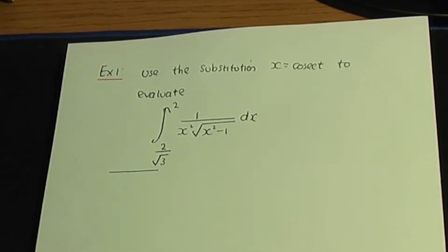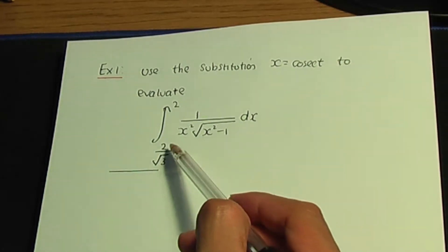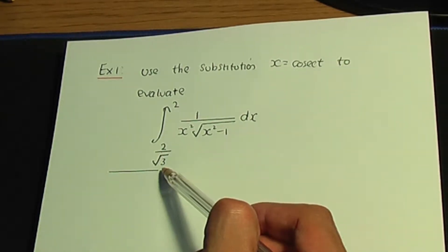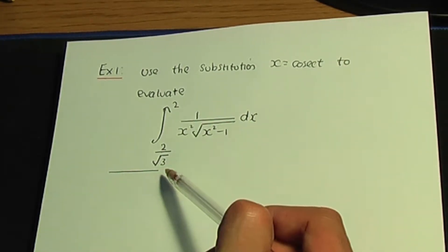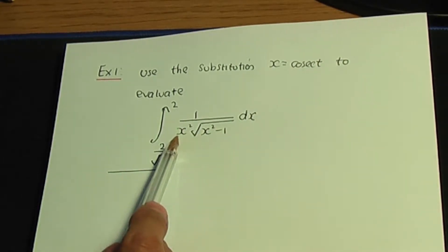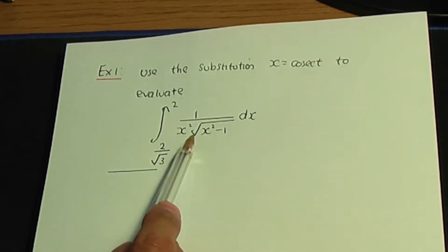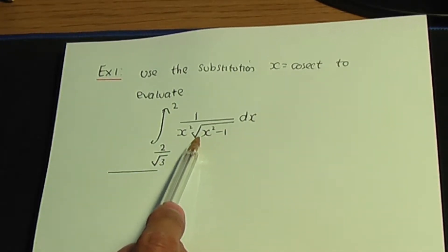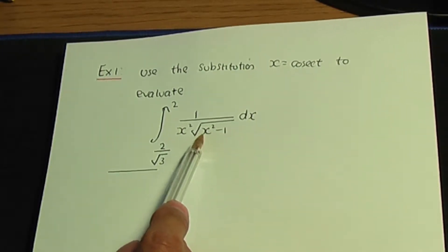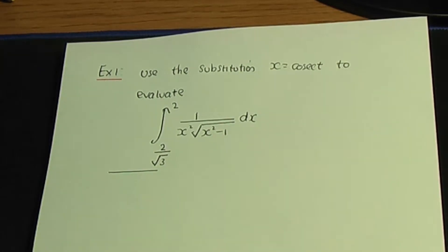Example number one: use the substitution x is equal to cosec t to evaluate this integral between limits 2 over square root of 3 and 2, of 1 over x squared into the root of x squared minus 1, with respect to x.